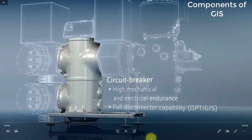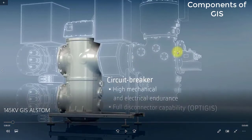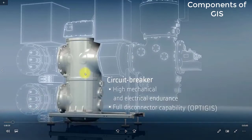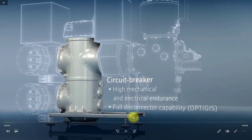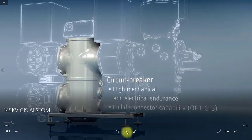Welcome friends. In this section we will go through the 3D animation of the gas insulated switchgear and see its different components. Here in the background you can see a 145 kV gas insulated switchgear by Alstom. This is the circuit breaker compartment — inside it are the circuit breaker fixed and moving contacts. This is a very important component for controlling switching on/off and current interruption. The gas pressure in the circuit breaker compartment is usually higher than other compartments because of the arc quenching process.